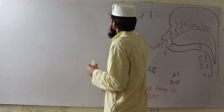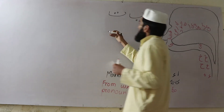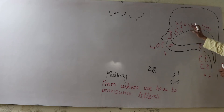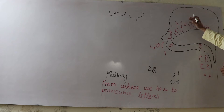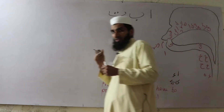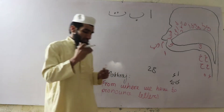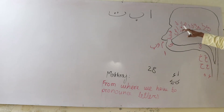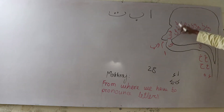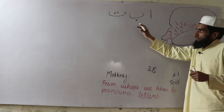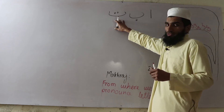Next is Ta, like T-A. Its place of pronunciation is where the front corner of our tongue touches the upper roots or front upper teeth — that is called Ta. Its recognition is two dots upside.